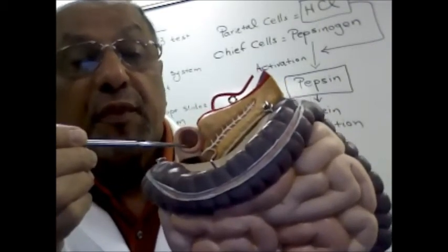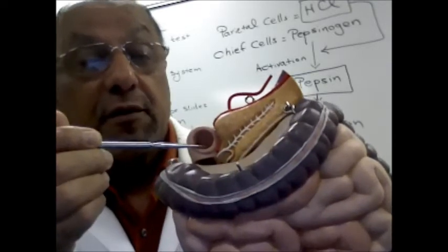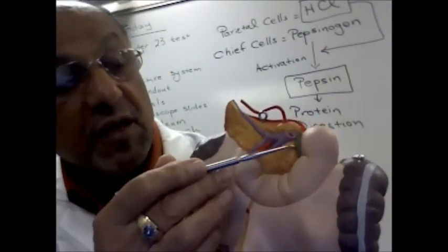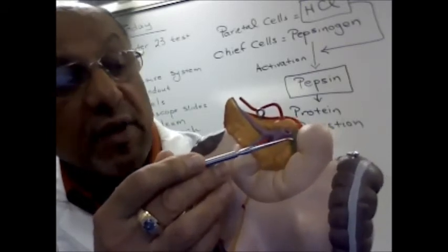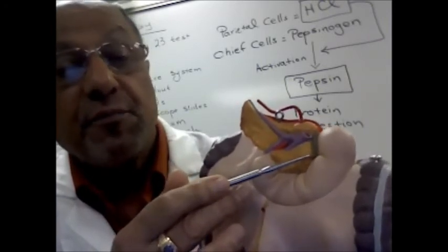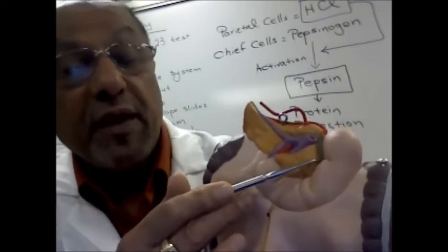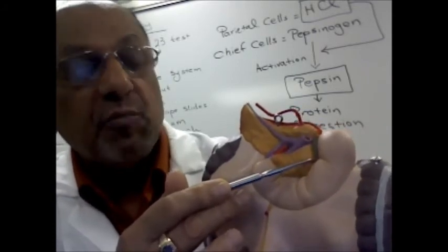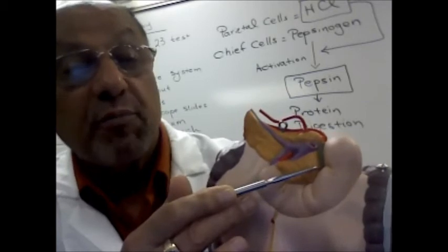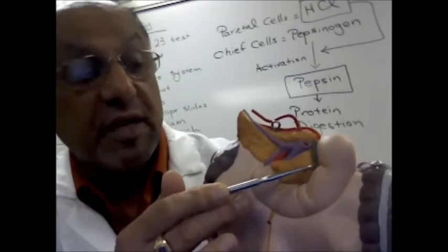Also, a product that comes from the liver is bile. On the other side of the model, the green line is the bile duct, and the bile duct brings the bile from the liver to the duodenum. The bile contains bile salts, and the bile salts are important in the digestion of lipids. They are responsible for what is known as emulsification — the lipid droplets will be broken down into smaller droplets, which makes it easier for the enzyme lipase from the pancreas to digest the lipid materials.